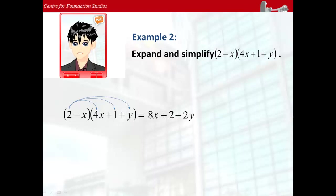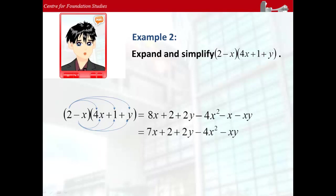Negative x multiplies to 4x gives negative 4x square. Negative x multiplies to 1 gives negative x and negative x multiplies to positive y gives negative xy. The expanded expression can be further simplified.